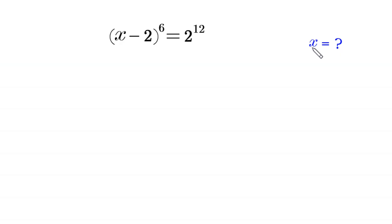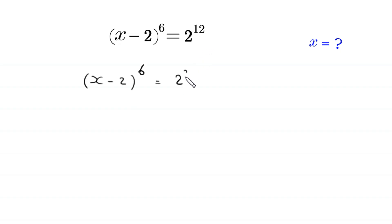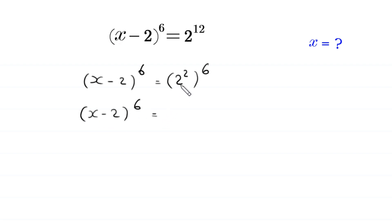So let's start. (x minus 2) whole to the power 6 is equal to 2 to the power 12, which can be written as (2 squared) whole to the power 6, so 2 squared becomes 4, giving us 4 to the power 6.